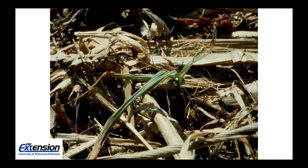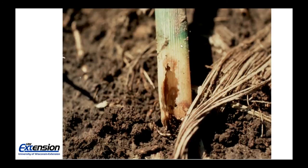Here's a picture of that dead heart or wilted whorl — damage coming from hop vine borers burrowing into that corn plant below ground level. Some of the other feeding scars you see on this leaf are from slug feeding, which we'll cover in just a little bit. Here's the soil line, and here's our entrance hole from hop vine borer — and that will always be below ground level.